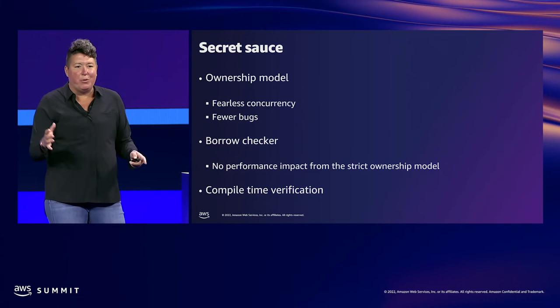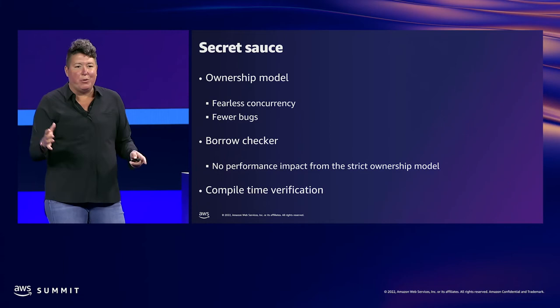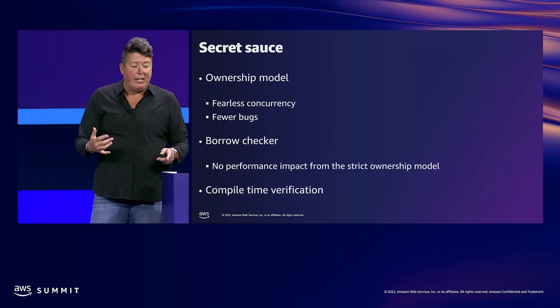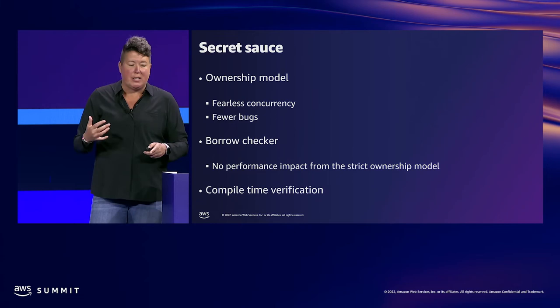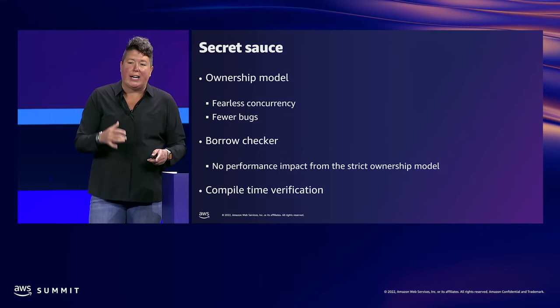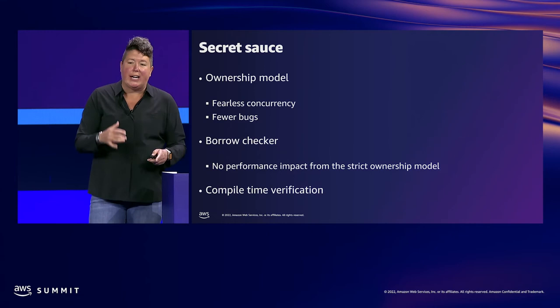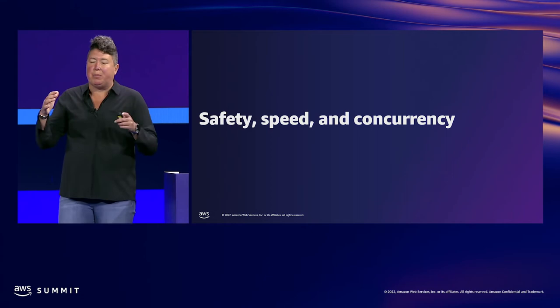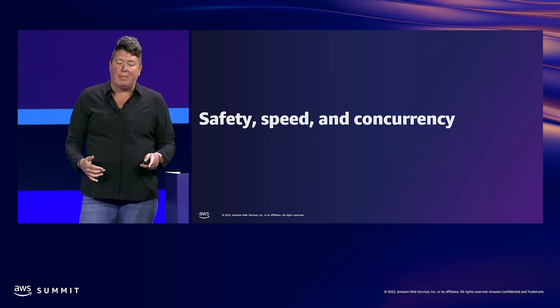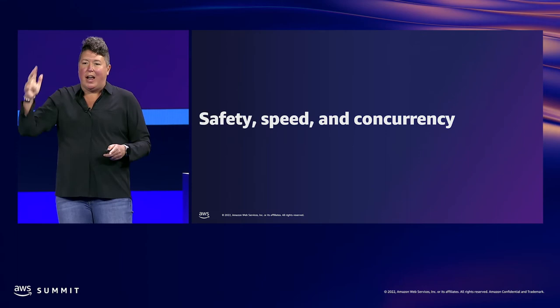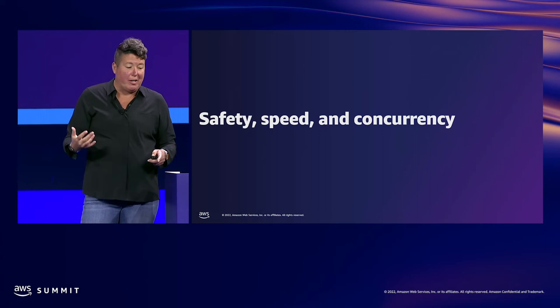To review the ingredients in Rust's secret sauce: the ownership model prevents multiple references to the same data, enabling fearless concurrency and reducing bugs with memory safety. The borrow checker eliminates the need to copy data in order to reference it, keeping performance clean without compromising ownership. And all of this is checked at compile time, preventing developers from producing a program that violates these rules. The secret sauce delivers an unmatched combination of optimized safety, speed, and concurrency — that's the magic that makes Rust unique.